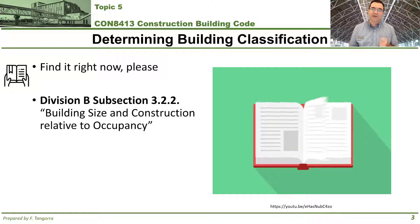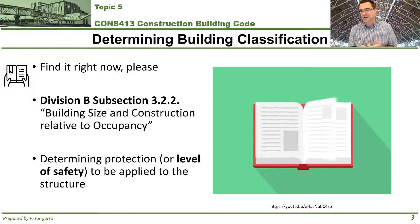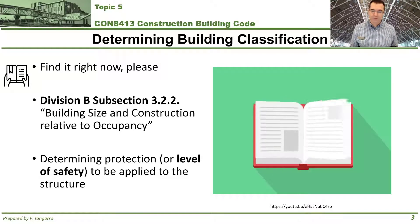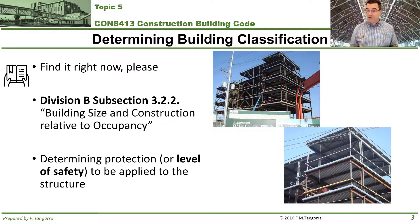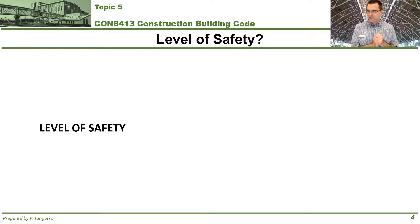The whole point of this subsection is that once you're familiar with it, it allows the user to determine and assign a certain level of protection or safety to the structure. The structure of any building — even when under construction, as seen in these images on screen — must be afforded a level of safety from fire. That's where subsection 3.2.2 comes into play.